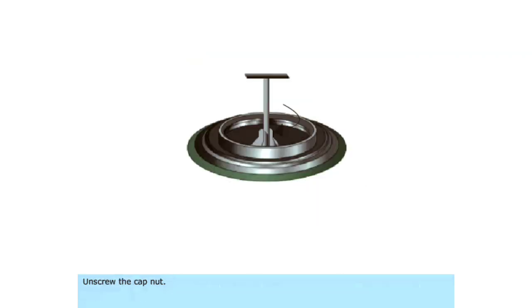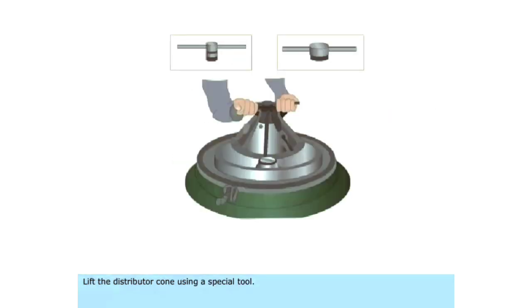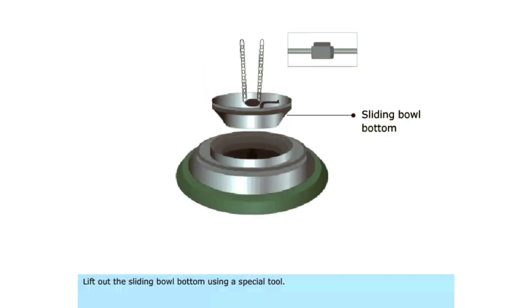Unscrew the cap nut. Lift the distributor cone using a special tool. Lift out the sliding bowl bottom using a special tool.